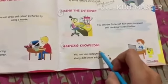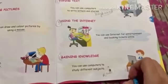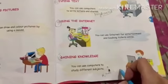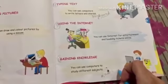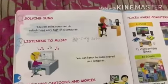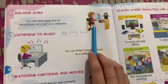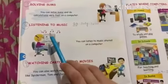Next is gaining knowledge. You can do online learning on the computer, and it is very helpful for gaining knowledge. Next, you can solve sums on the computer — you can calculate your maths and calculations on the computer.